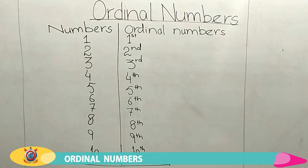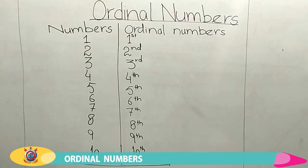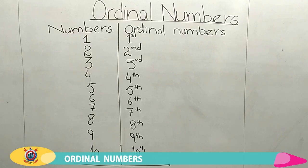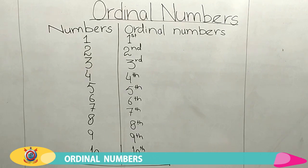Now it's time for homework. Your homework is to learn and write ordinal numbers from 1 to 10 neatly. Your homework should be neat and proper. Draw margin lines and don't forget to write in the plane. Write your homework just as I have done it on the board, and draw a finishing line at the end.